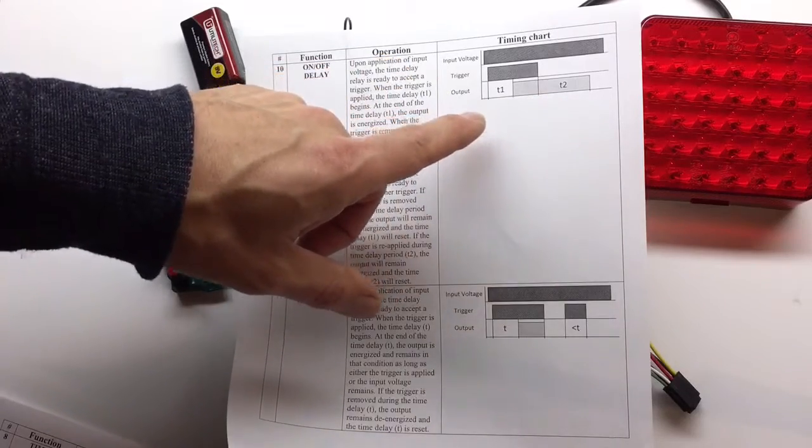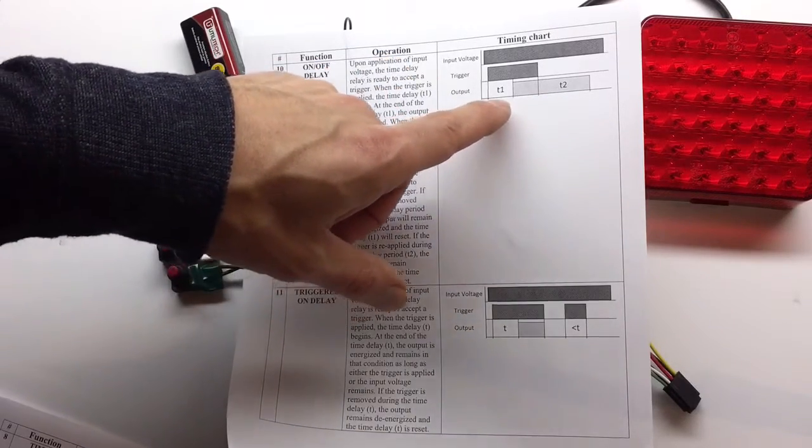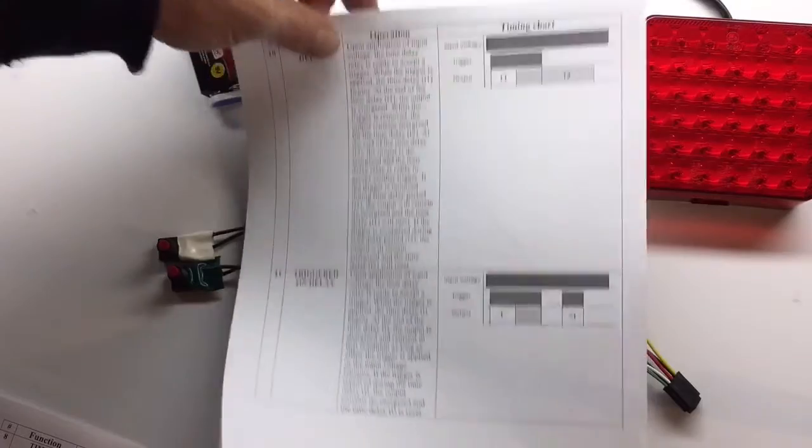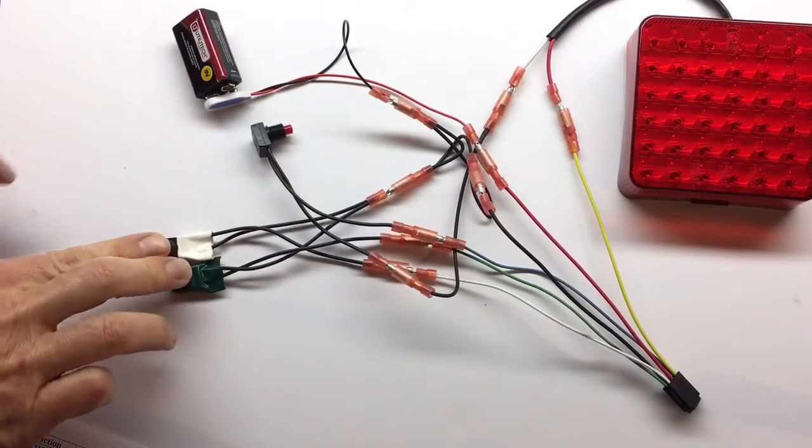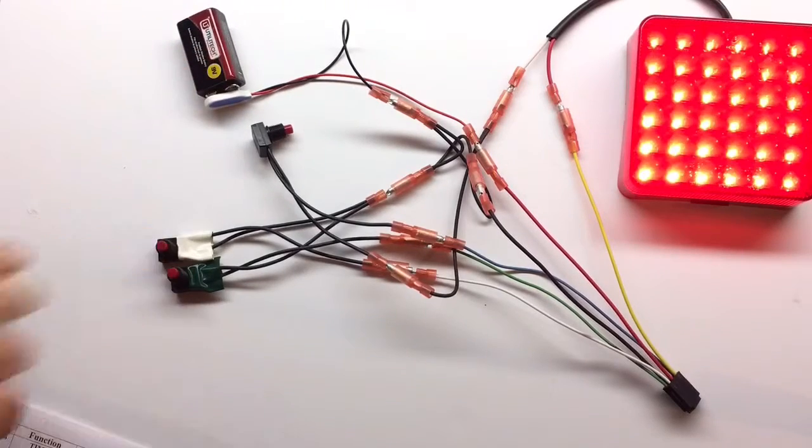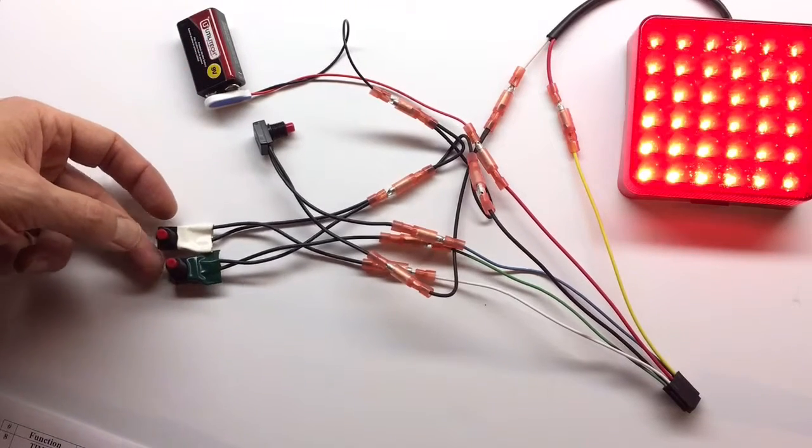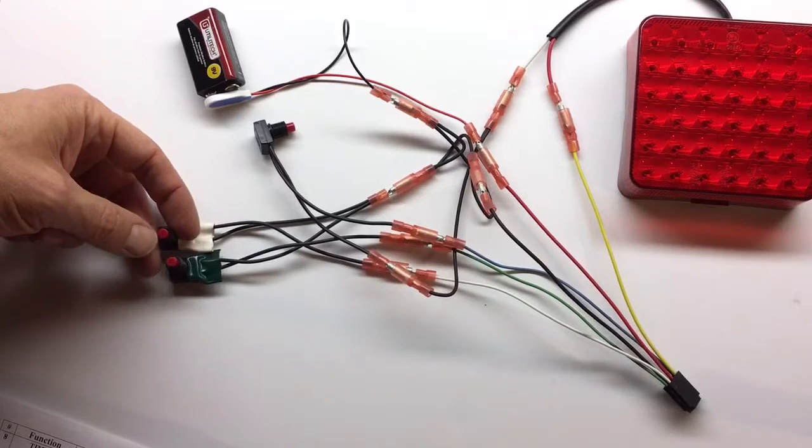Once the trigger is released, the light will stay on for two seconds. So it delays time on and also time off. Let's configure that. Push two buttons and supply the power, release the buttons.